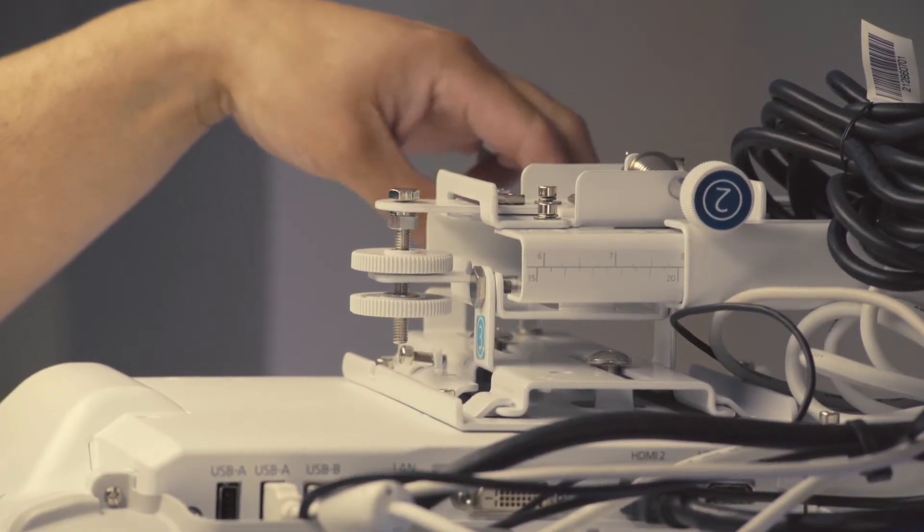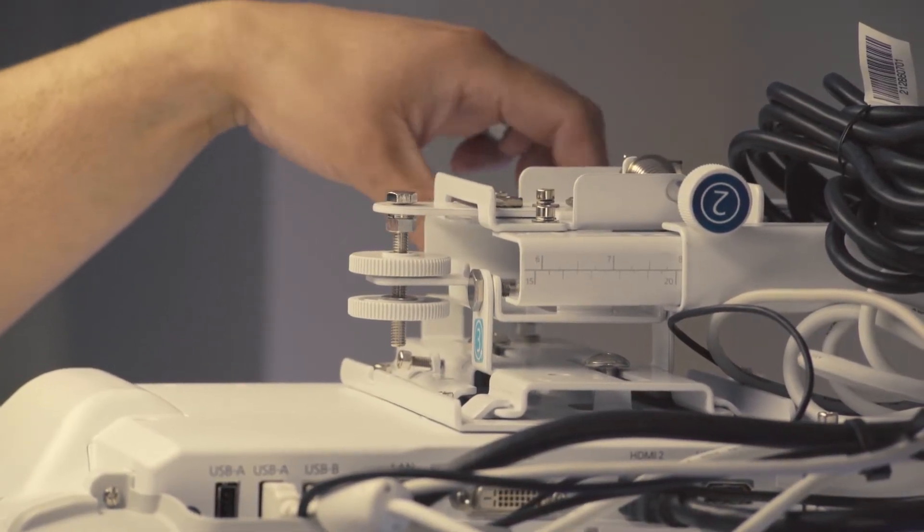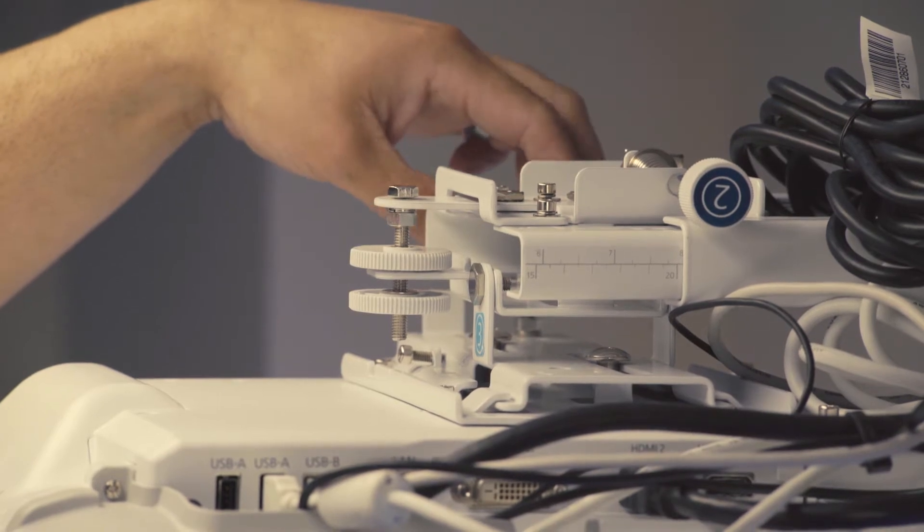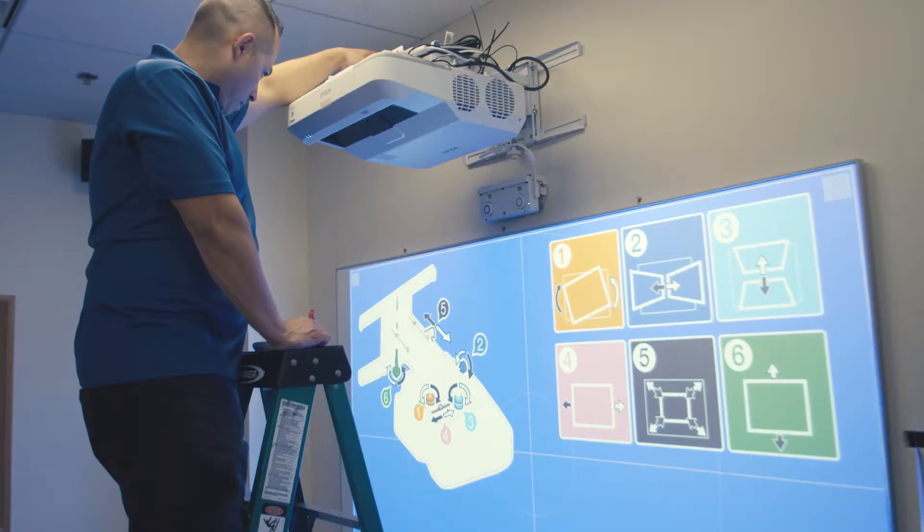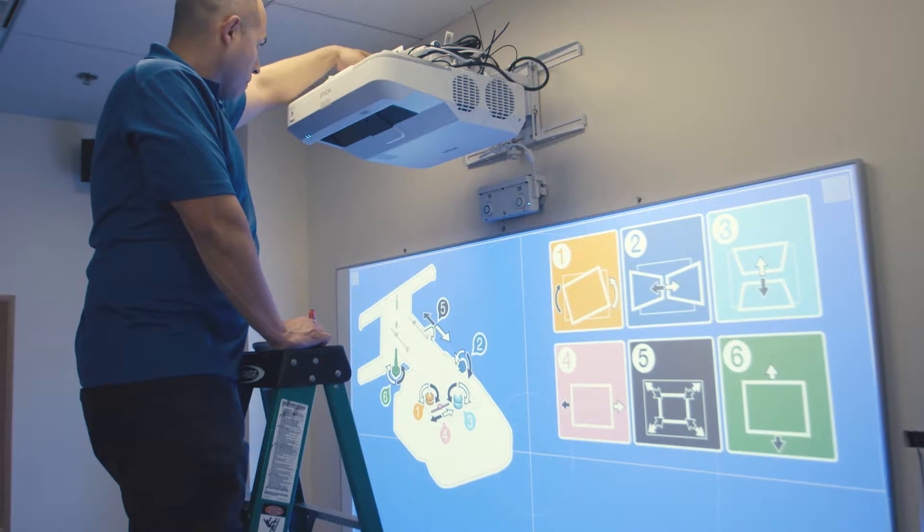You then need to adjust the roll, pitch, and yaw of the projector to get the image squared. You can get assistance for these adjustments by using the on-screen help inside the projector.